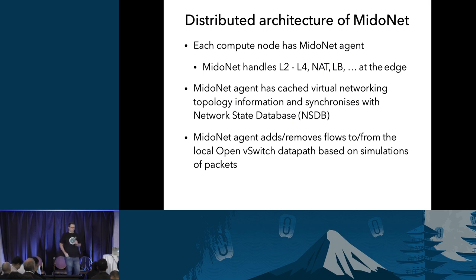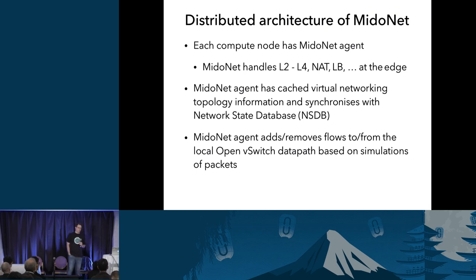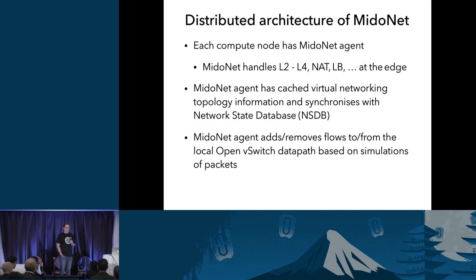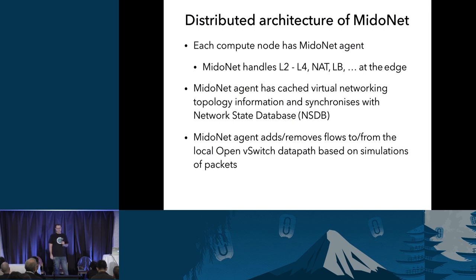On NSDB nodes: for production, we recommend setting up three nodes. You can run just one for an all-in-one setup — it's not highly available, but it works. With three nodes you can handle one failure — if one fails you can still read but not write. If you want to handle two failures, set up five nodes.